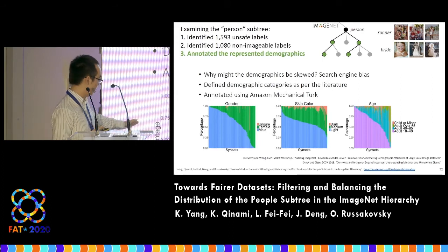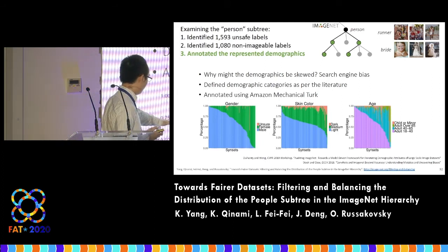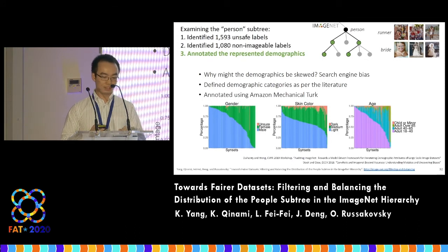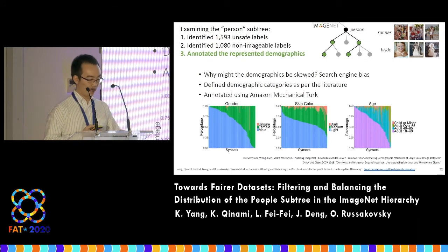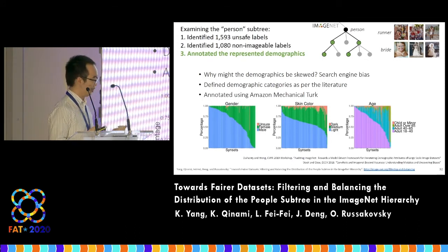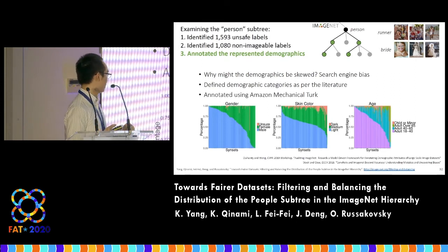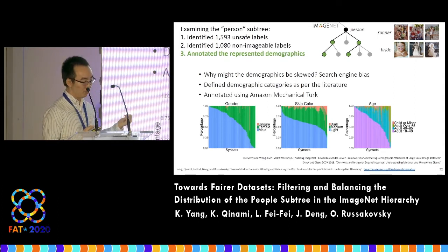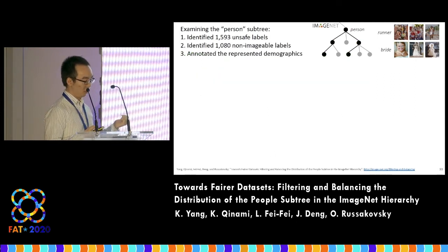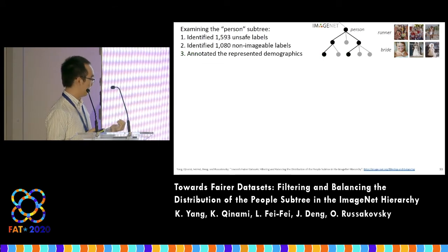Take gender as an example. The blue area in the first figure is larger than the green area, which suggests overall there are more men than women in the images. For most labels, only a small number of images were annotated as unsure, but there are two interesting exceptions.